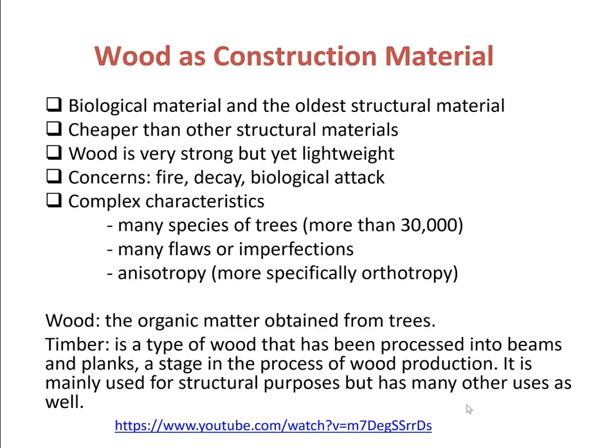The characteristics of wood are very complex. This is because we have many different species of trees — actually more than 30,000 in total. Wood also has a lot of flaws or imperfections caused by natural growth, wood disease, animal parasites, too rapid seasoning, or faulty processing, and these can affect its appearance, its mechanical properties, or both. Also, wood is not an isotropic material — it's anisotropic, more specifically it's orthotropic. We will talk about this in greater detail later.